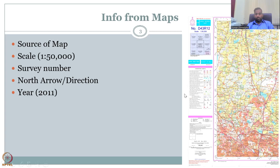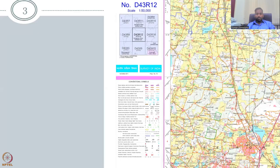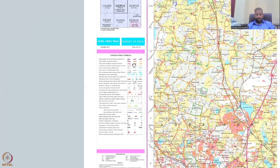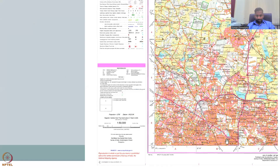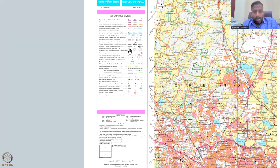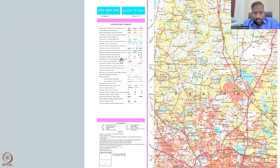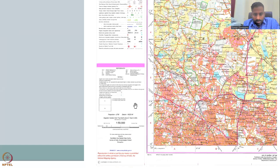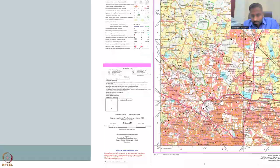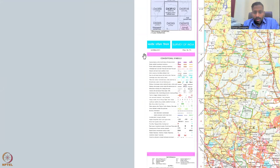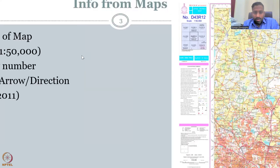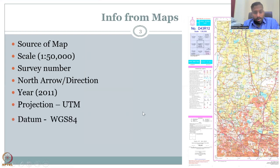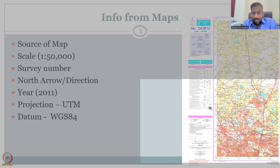The year of the map is also important for temporal analysis. You can find it by zooming in — this map shows copyright dates of 2001, 2005, and 2011, with the first edition being 2011. We will use 2011 as the map year. The projection and coordinate system are given on the map as well — the projection is UTM, which is appropriate for the Indian subcontinent and the Karnataka central region. The datum is WGS84, a type of coordinate reference system with a particular datum at the center.